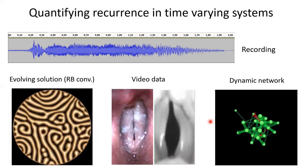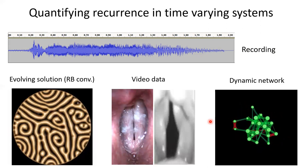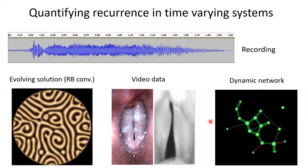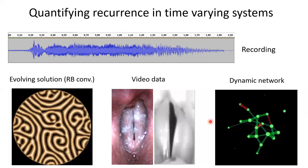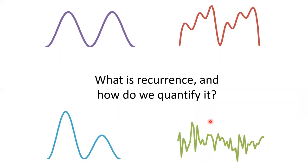One reason to care about recurrence is that if you're thinking about prediction, if an event happened in the past, then you have a better chance to predict it in the future. So recurrence is something that can be used and leveraged for prediction purposes. That's the central question: what is recurrence and how do we quantify it? And we'll see how topology can help in these types of questions.